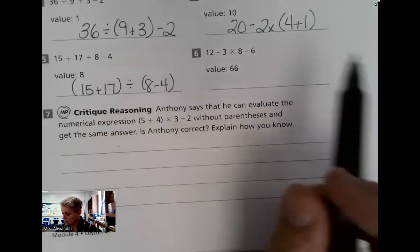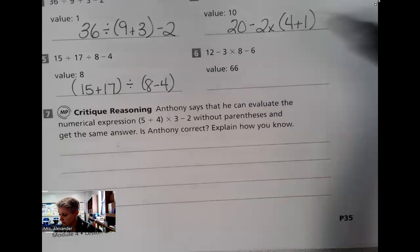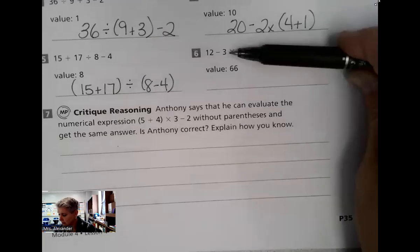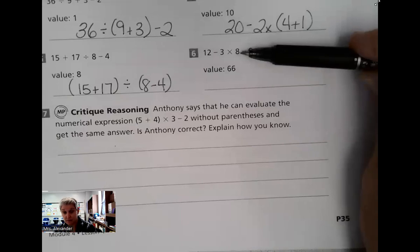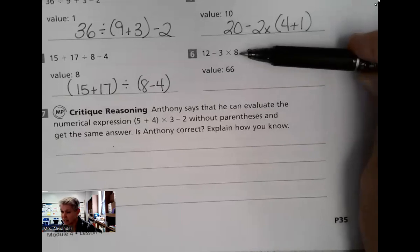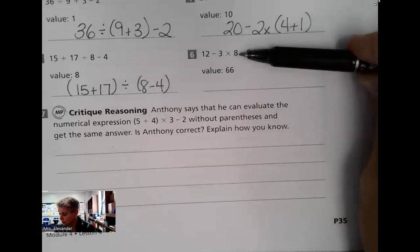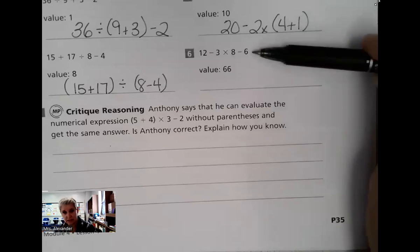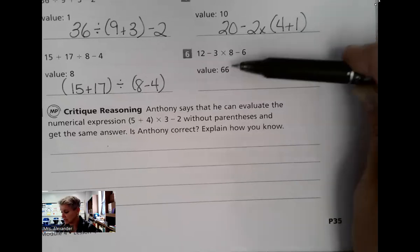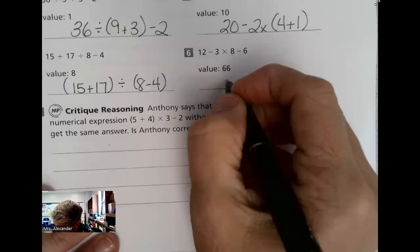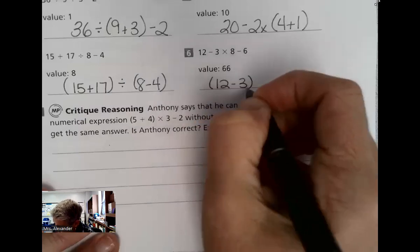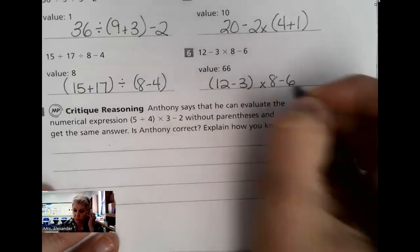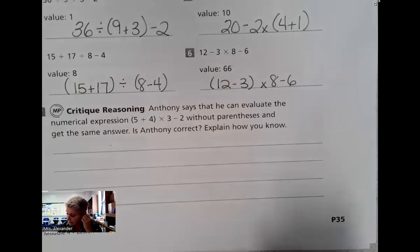Last one. Starting at the front: 12 minus three equals nine. Nine times eight equals 72. 72 minus six equals 66. That one worked out nicely right from the beginning. So we put 12 minus three in parentheses: the difference of 12 and three, times eight, minus six.